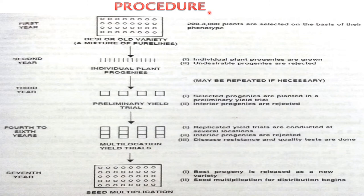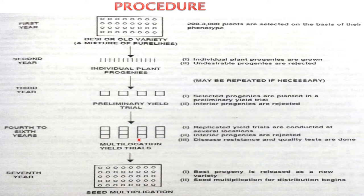The procedure for pure line selection: in the first year, 200 to 300 plants are selected on the basis of phenotype. In the second year, individual plant progeny are grown and undesirable progenies are rejected. In the third year, selected progenies are planted in a preliminary yield trial and inferior progenies are rejected. From the fourth to sixth year, replicated yield trials are conducted at several locations — inferior progenies are rejected, and disease resistance and quality tests are done. In the seventh year, the best progeny is released as a new variety and seed multiplication for distribution begins.